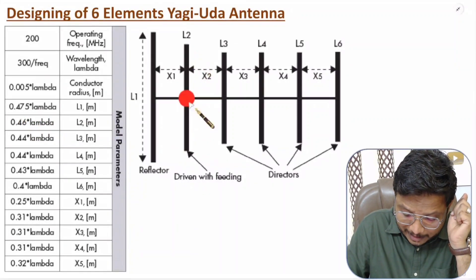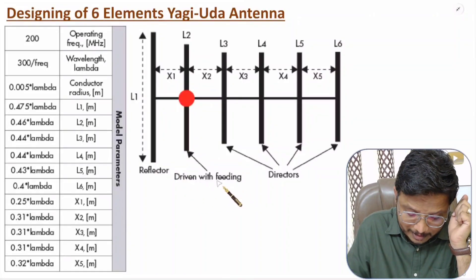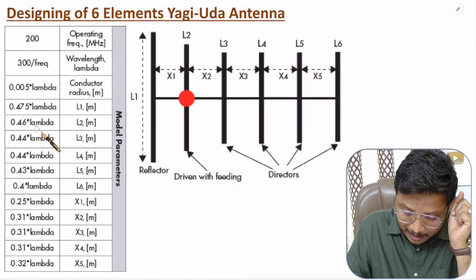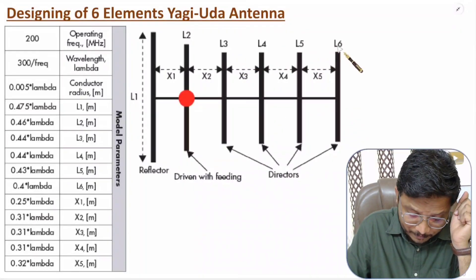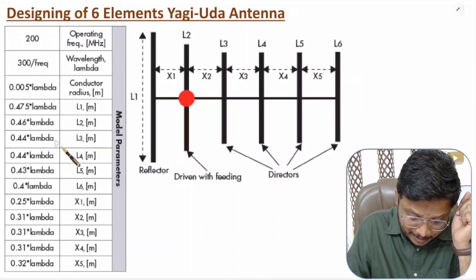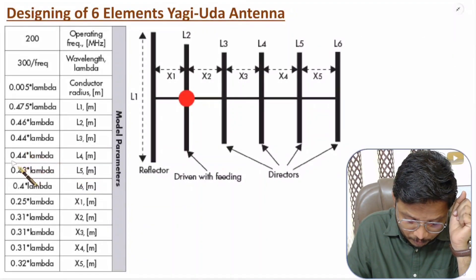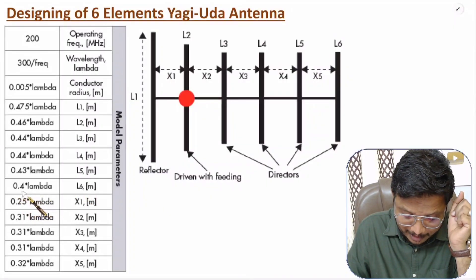Here L2 is the size of the driven element, which will be 0.46 lambda. The director elements have sizes L3, L4, L5, and L6. L3 and L4 are 0.44 lambda, L5 is 0.43 lambda, and L6 is 0.4 lambda.